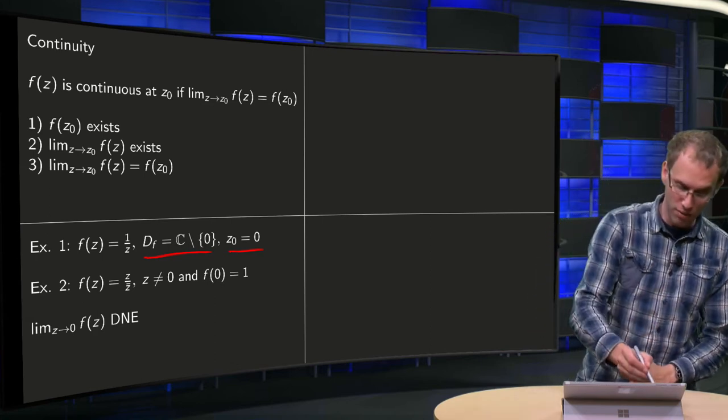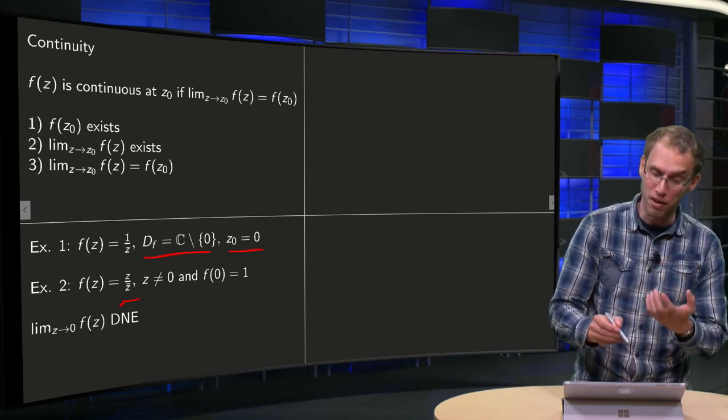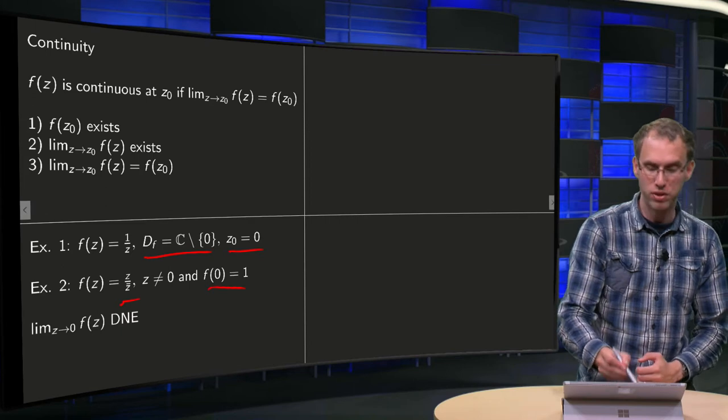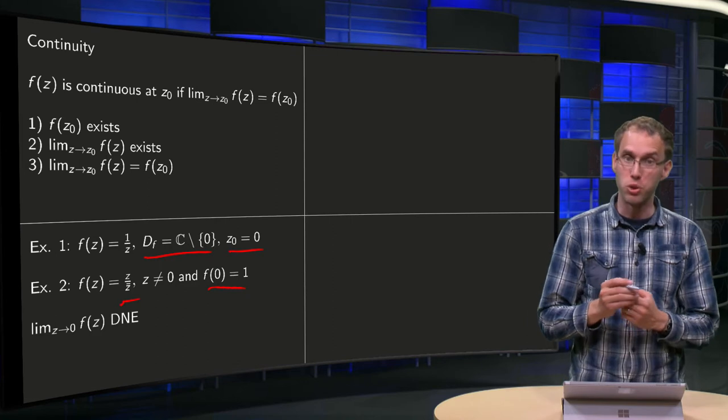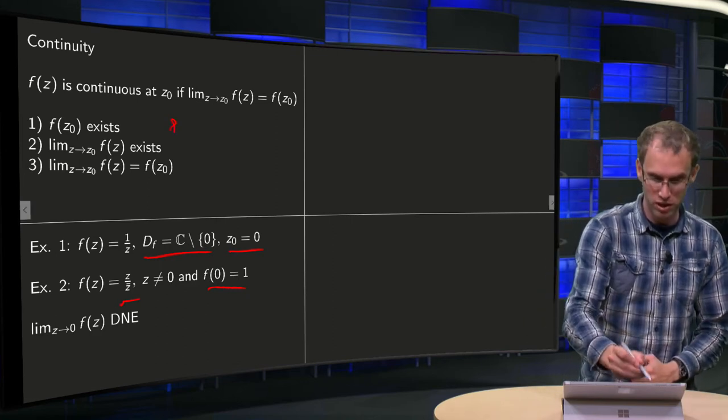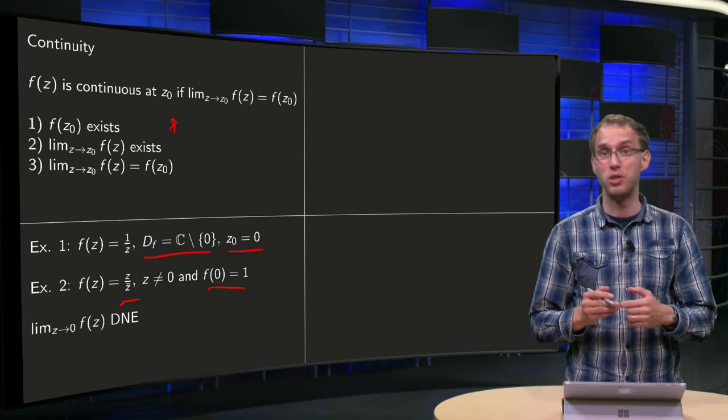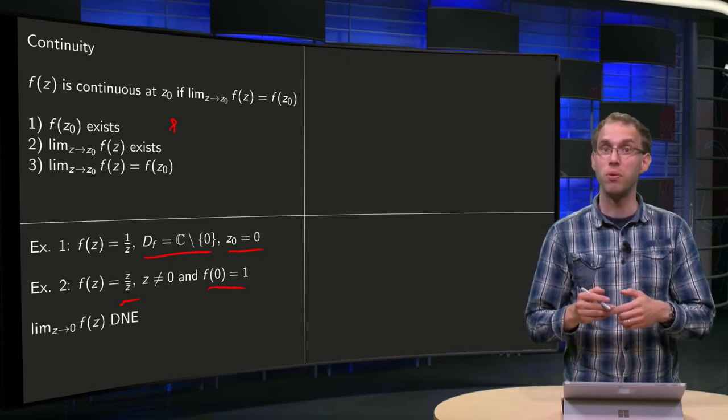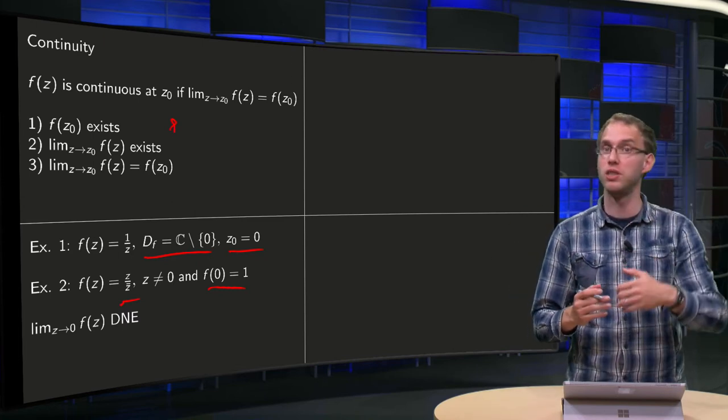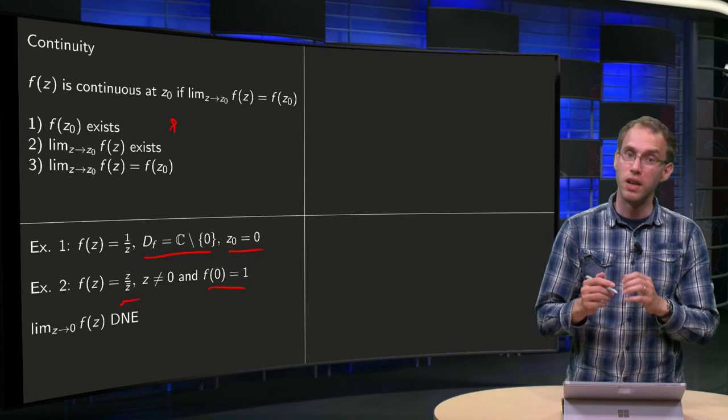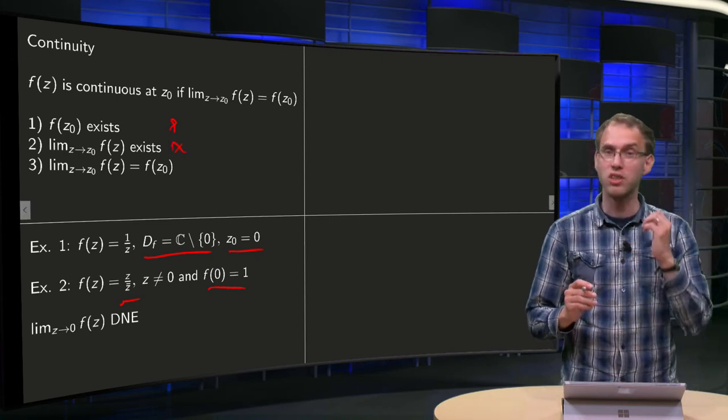Second function, f(z) = z/z̄ for z ≠ 0, and we define f(0) = 1. So the first condition is true now, f(z) exists. However, if we try to take the limit as z→0, we've already seen in an earlier example that the limit does not exist. Going along the x-axis yields 1, but going along the y-axis yields -1. So the limit does not exist, so this function is not continuous.